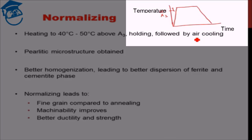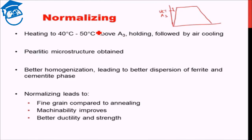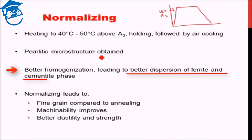As a result of normalizing, a pearlitic microstructure is obtained. Here too we are talking about hypo-eutectoid or eutectoid steel. We do not normally carry out normalizing for hyper-eutectoid steel, because for hyper-eutectoid steel, normalizing would cause cementite phase to form on the grain boundaries, making the material really brittle. Normalizing provides good homogenization and leads to better dispersion of ferrite and cementite phases throughout the microstructure.